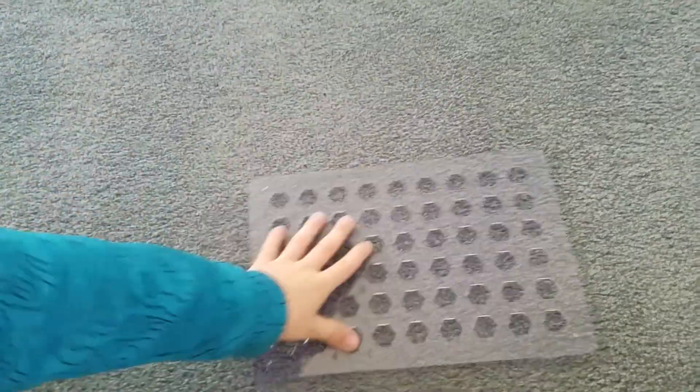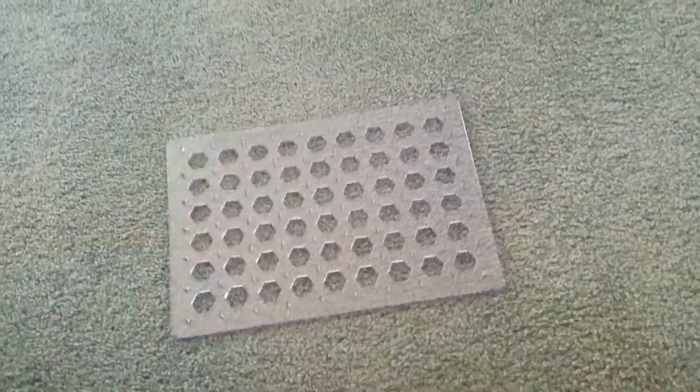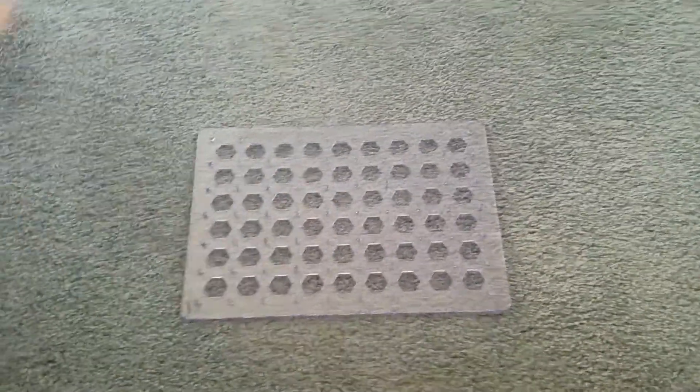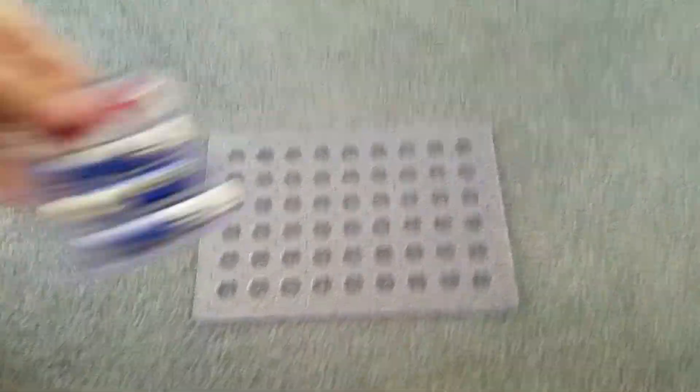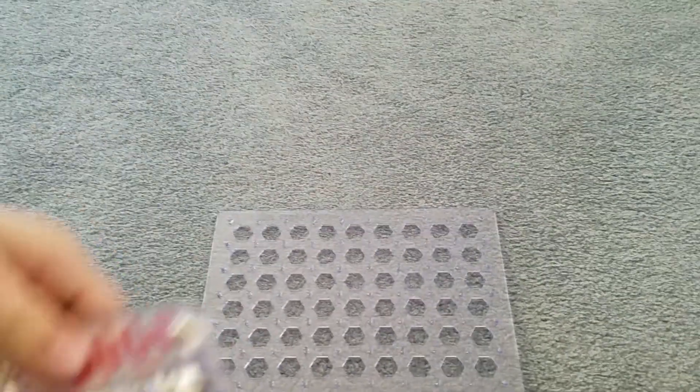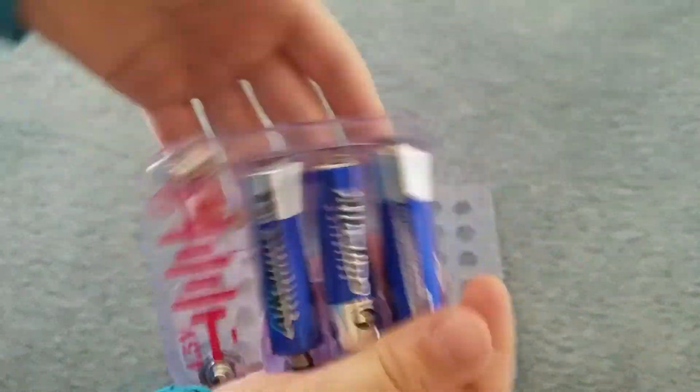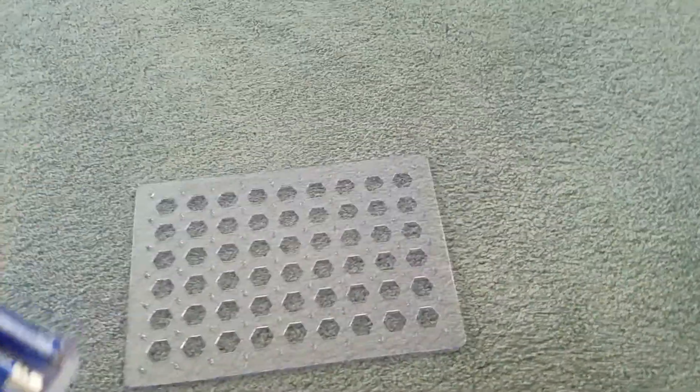First, you are going to need a circuit board. Well, board with circuits connecting. Next, you're going to need the battery pack. You can get the batteries from Kroger and it comes with the battery pack.